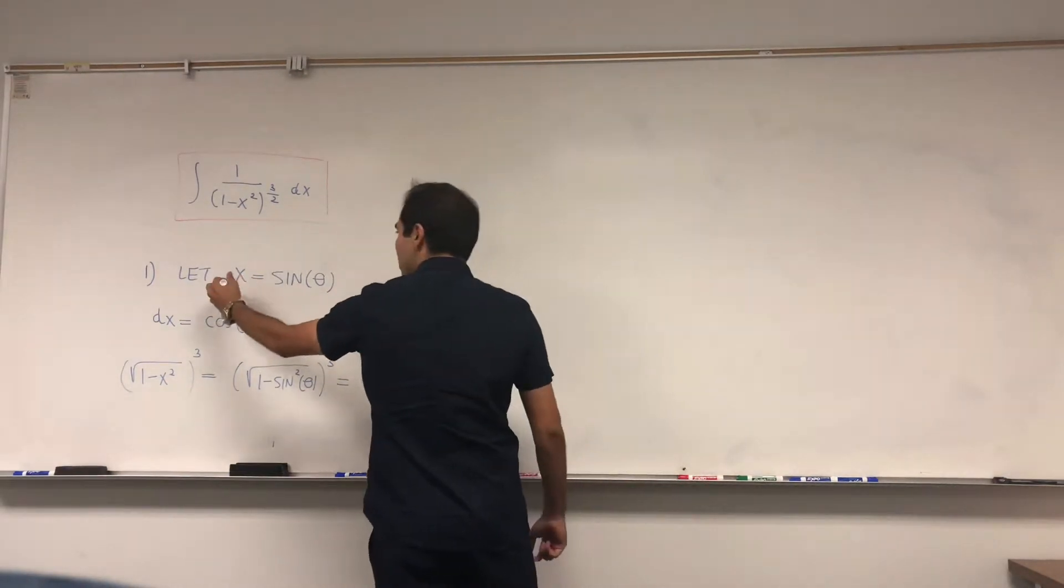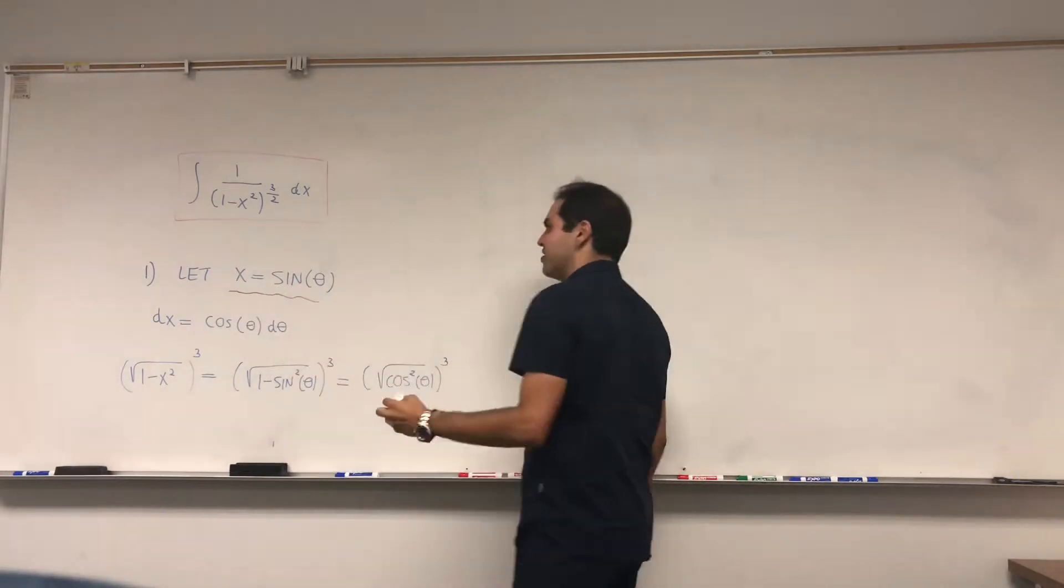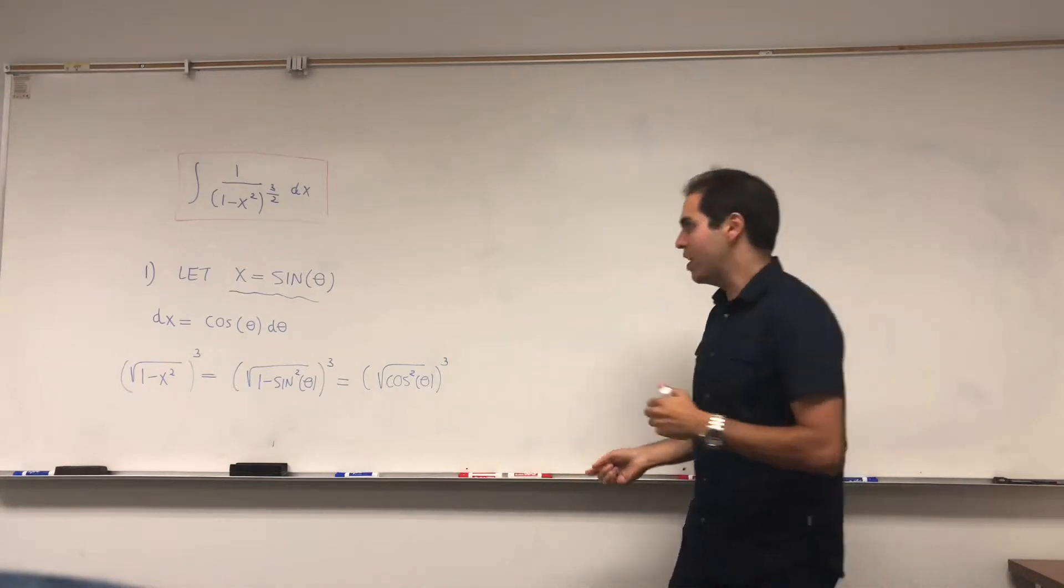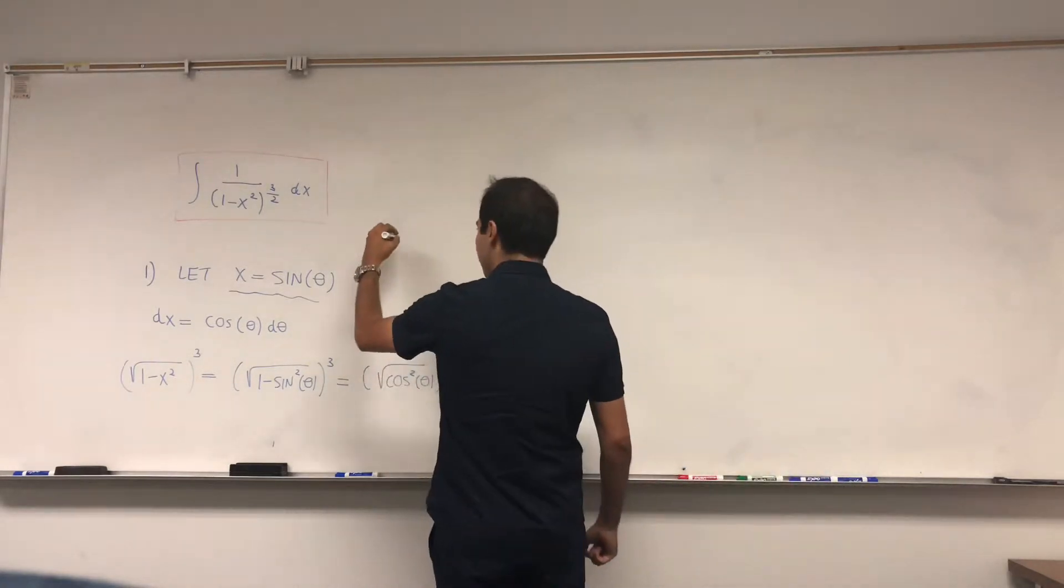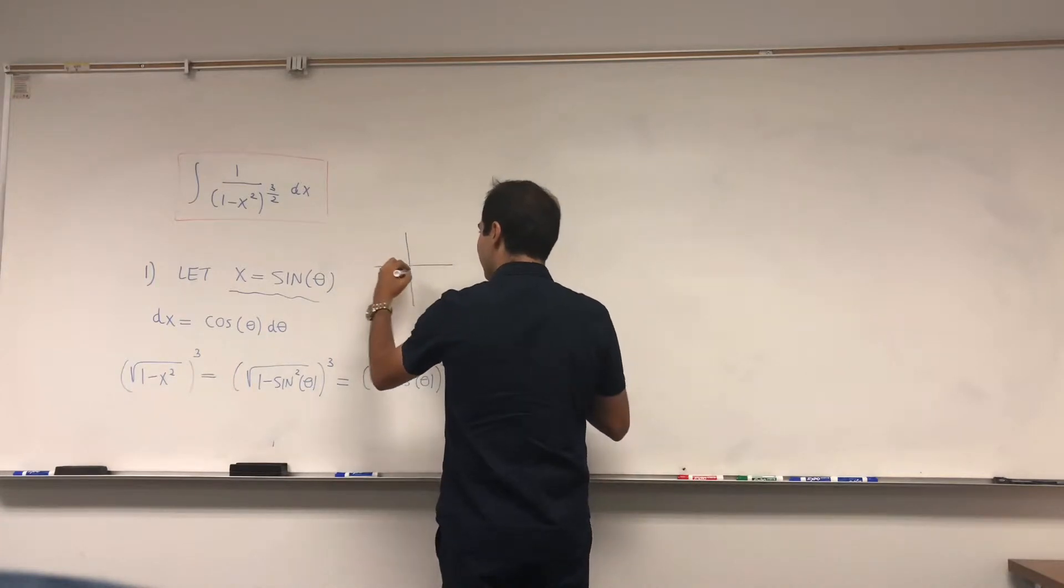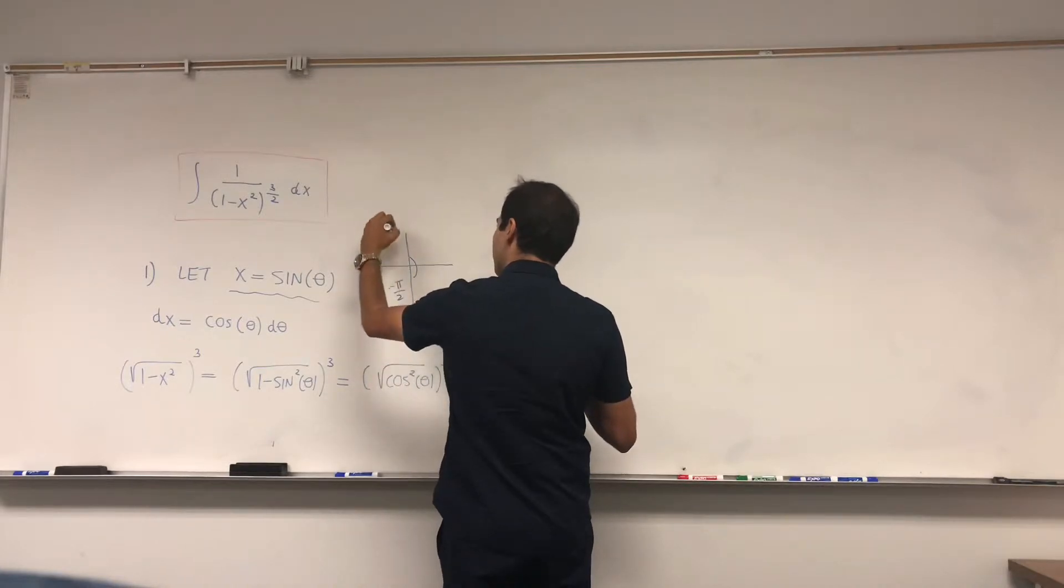That's because when we let x equals sine of theta, this substitution only works for a specific range of theta, namely where sine is one-to-one, which in this case would be the interval minus pi over 2 to pi over 2.